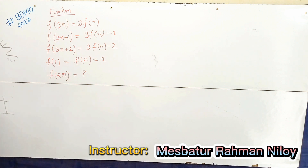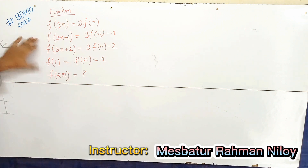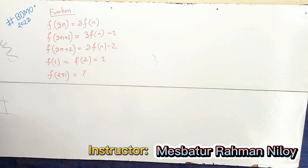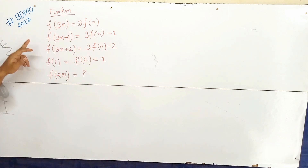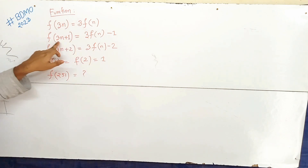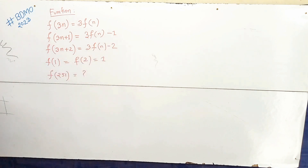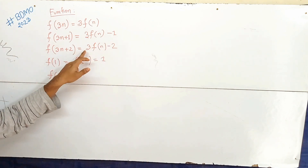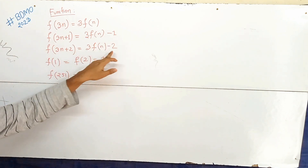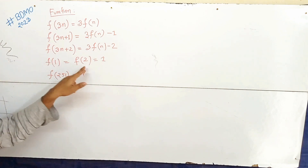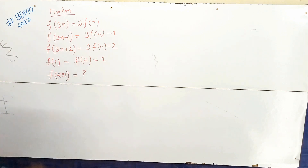The problem states that f(3n) = 3f(n), f(3n+1) = 3f(n) - 1, f(3n+2) = 3f(n) - 2, and f(1) = f(2) = 1.